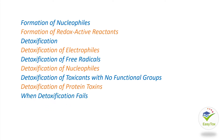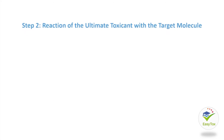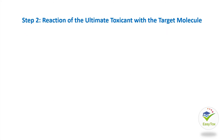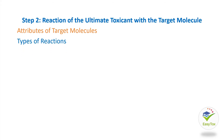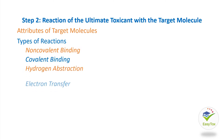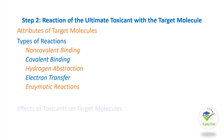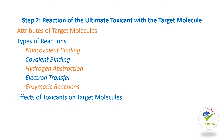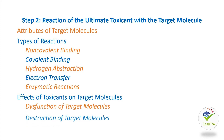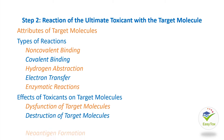Step 2: Reaction of the Ultimate Toxicant with the Target Molecule. Subsections are: Attributes of Target Molecules; Types of Reactions, with subsections including Non-Covalent Binding, Covalent Binding, Hydrogen Abstraction, Electron Transfer, and Enzymatic Reactions; Effects of Toxicants on Target Molecules, with subsections covering Dysfunction of Target Molecules, Destruction of Target Molecules, and Neoantigen Formation.